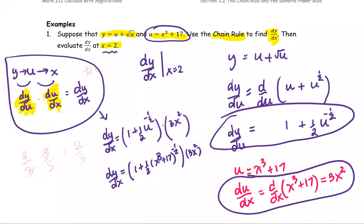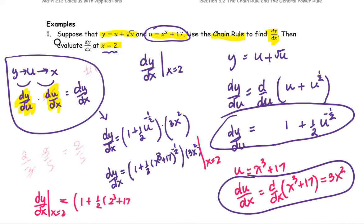Now replace x with 2. dy/dx at x equals 2 equals the quantity 1 plus one-half multiplied by 2 cubed plus 17 to the power negative one-half, close the parenthesis, multiplied by 3 times 2 squared. Cleaning up: 2 cubed is 8, and 8 plus 17 is 25. Then 25 to the power negative one-half equals 1 over 25 to the one-half, which is 1 over the square root of 25, or 1 over 5.